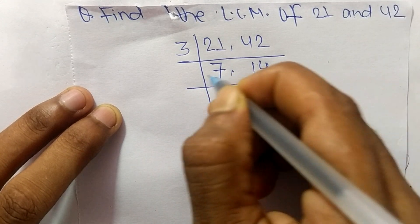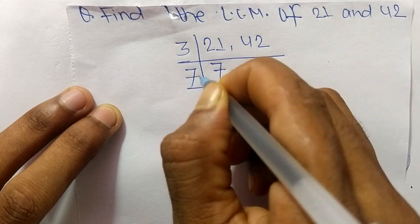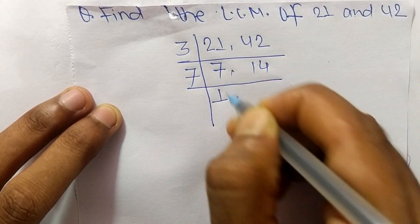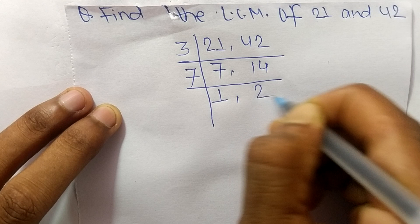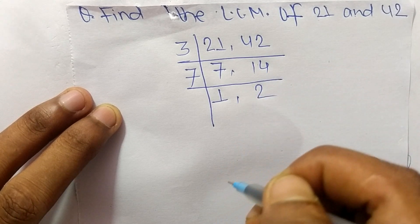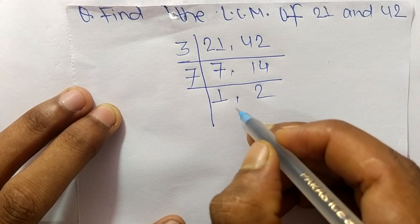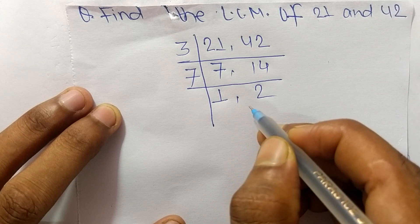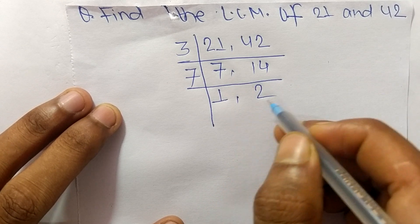So now we have here 7 and 14, which is exactly divisible by 7. So 7 times 1 means 7, and 7 times 2 means it is 14. So now at last we have here 1 and 2, which are not exactly divisible by the same number.